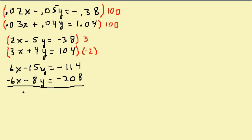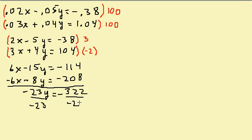Now I add the two equations. The x's cancel out and I'm left with negative 23y equals negative 322. Dividing both sides by negative 23, I get y equals 14.